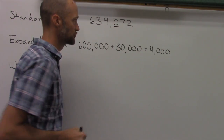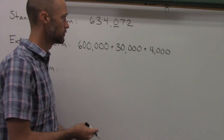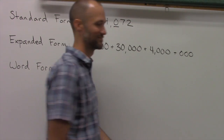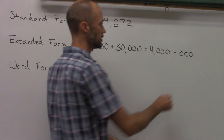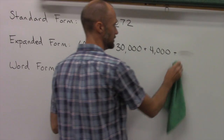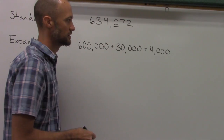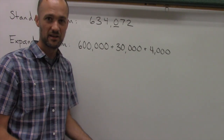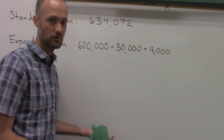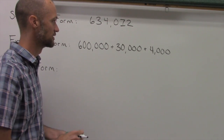The next digit is a little tricky — it's a zero. The zero doesn't have any value, so we wouldn't write zero hundreds. That wouldn't make sense. So instead of writing zero or zero hundreds, we just skip over it because it has no value. We don't put any kind of notation for the zero in an expanded form number.